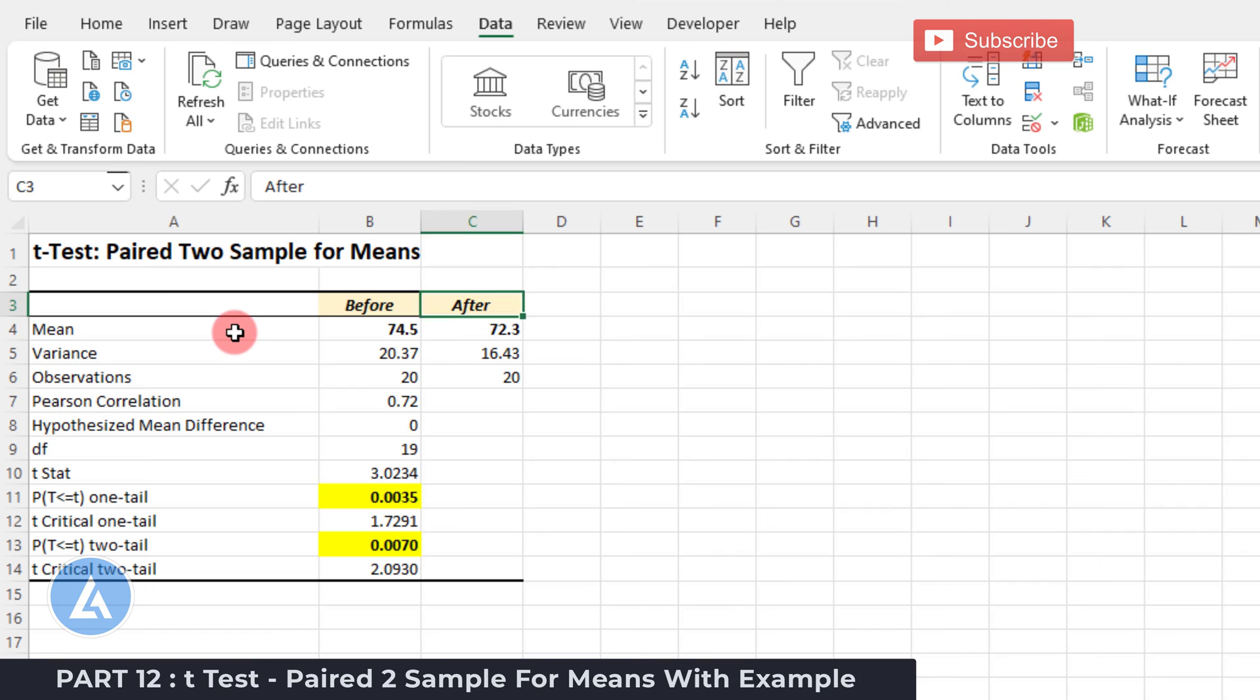As part of these results, we got mean for both before and after scenario, variance in both situations, the number of observations, Pearson correlation, hypothesized mean difference, degrees of freedom and we got the T-statistics.